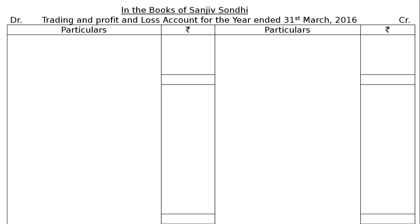Sanjeev Sundi started a business on 1st April 2015 with a capital of Rs. 3 lakh. There will be no opening stock as this is a new business. The following trial balance was drawn up from his books at the end of the year, that is 31st March 2016. We are required to prepare his Trading and Profit and Loss Account for the year ended 31st March 2016, and a Balance Sheet as at that date, after taking the following facts into account.